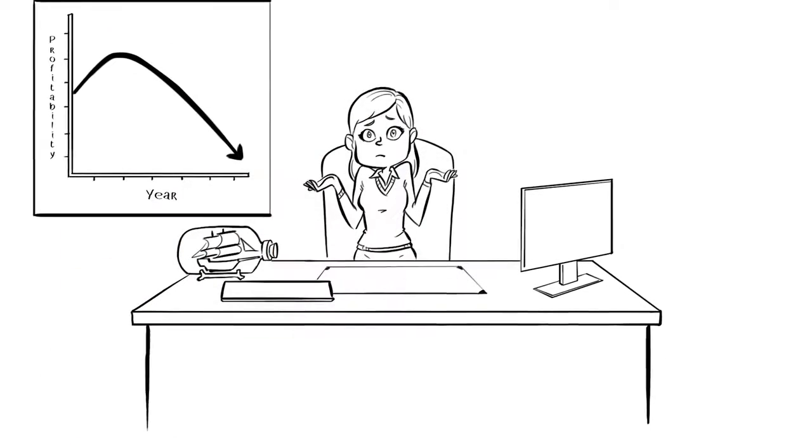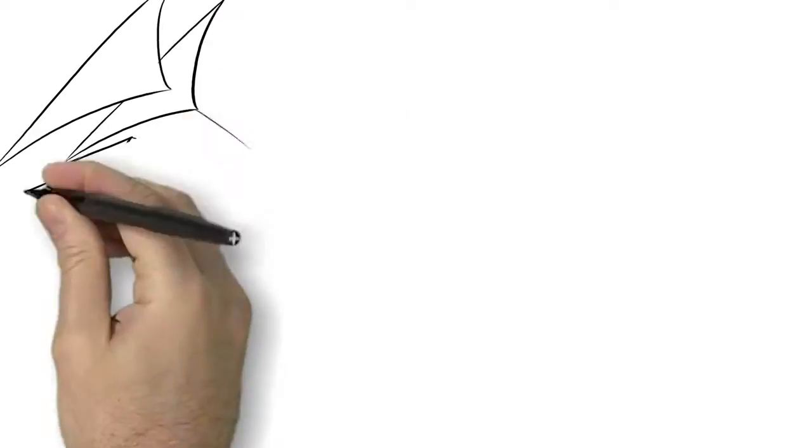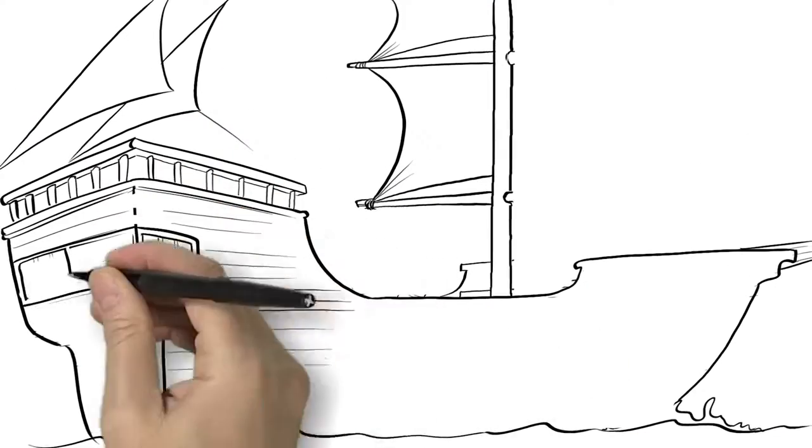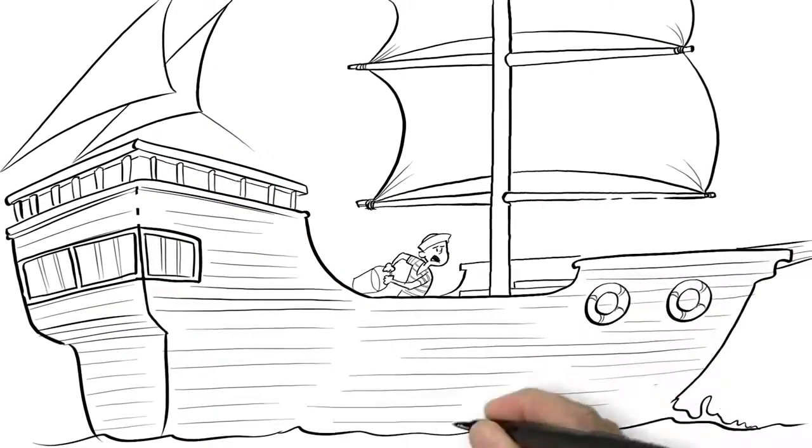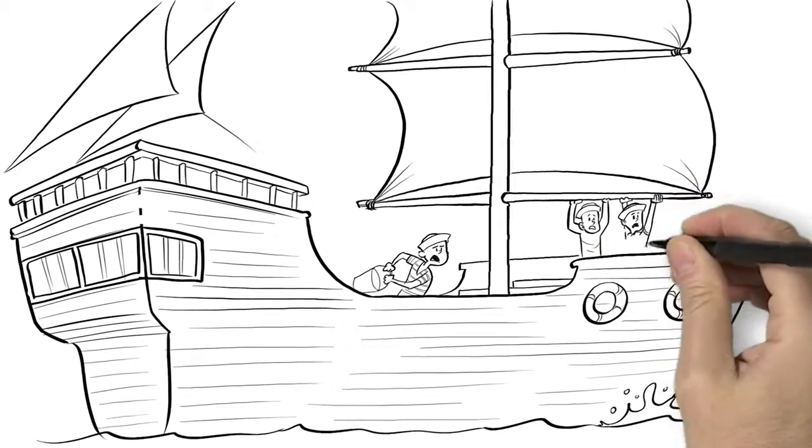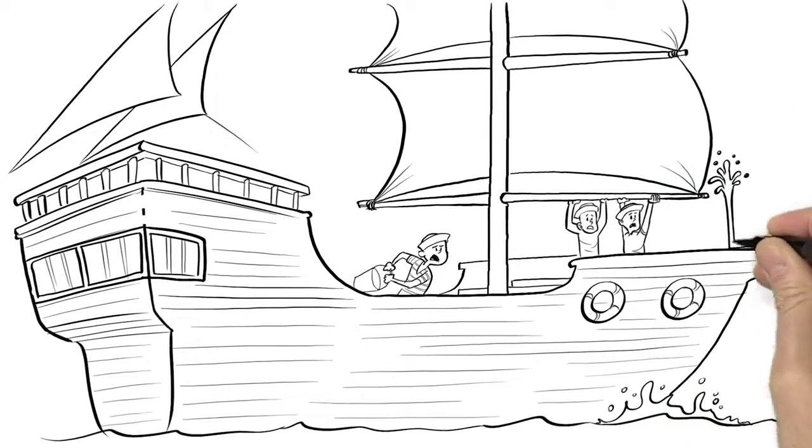The answer may lie in a leaky ship. When a ship begins to leak, the crew must bail or sink. Shifting crew from sailing to bailing saves the ship but slows progress.